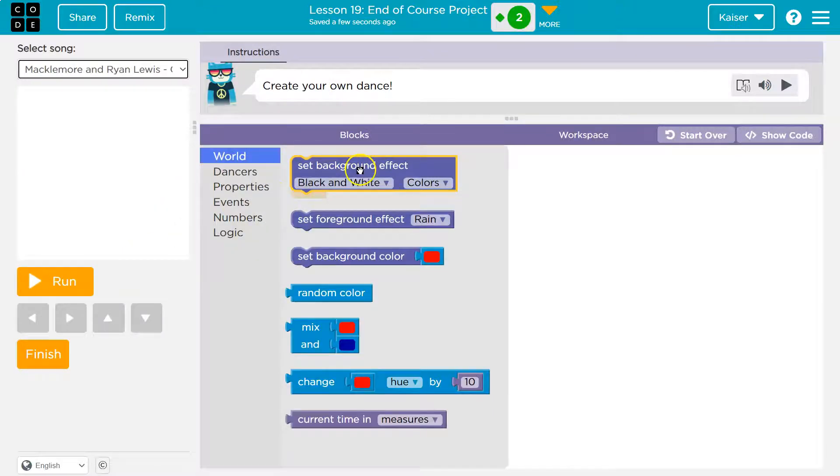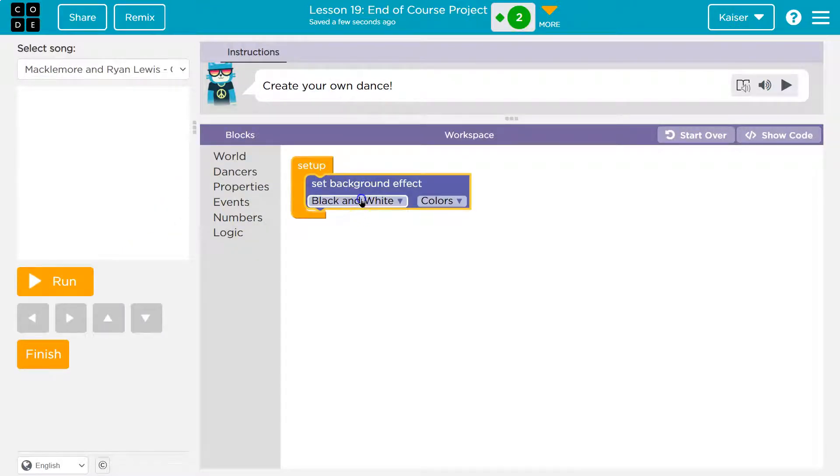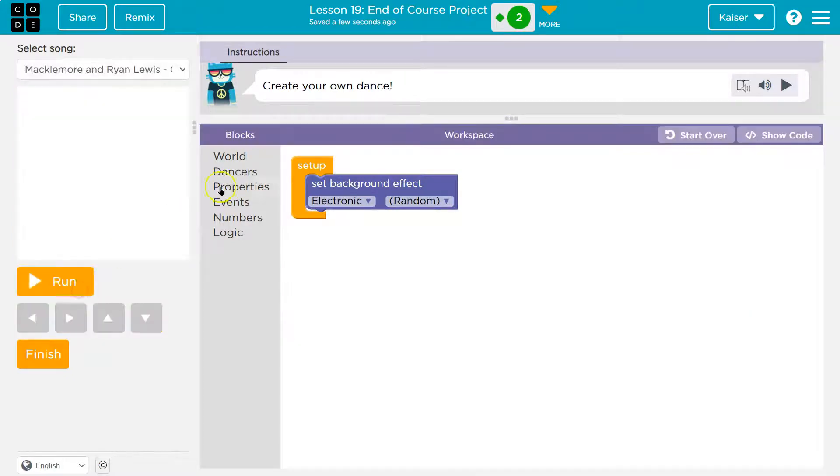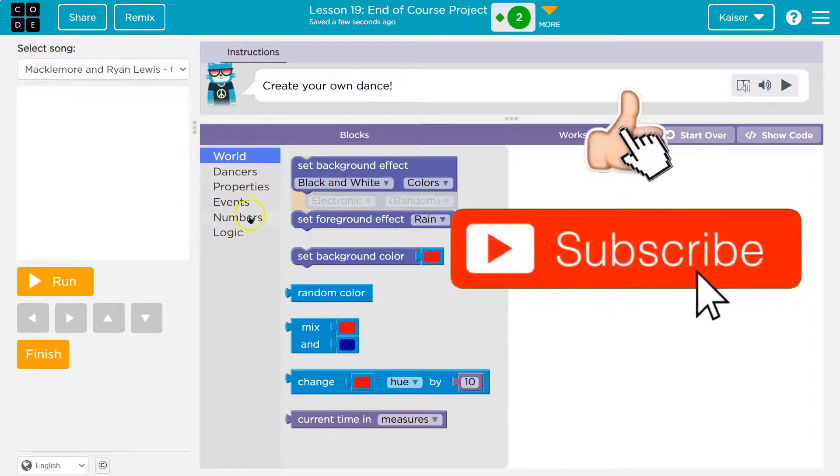Okay, on setup, I'm going to set background effect to electric and colors to random. Let's see. Yeah, randomized. Cool. And this is totally what we want it to be.